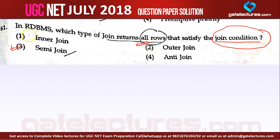The answer for this question is inner join. Inner join is done on the basis of the join condition, which returns all rows that are matching in both tables. Left outer join takes only values from the left table, so we are not taking all rows. In semi join we take values from the first table only. Anti join takes those rows which are not matching the join condition. So inner join is the right answer.